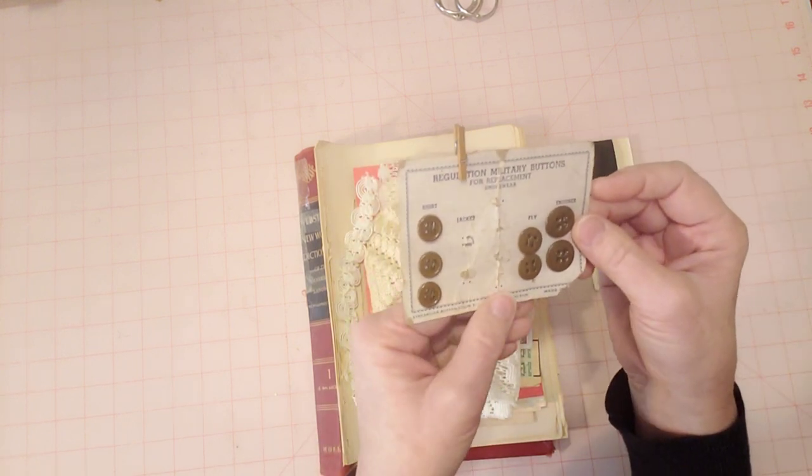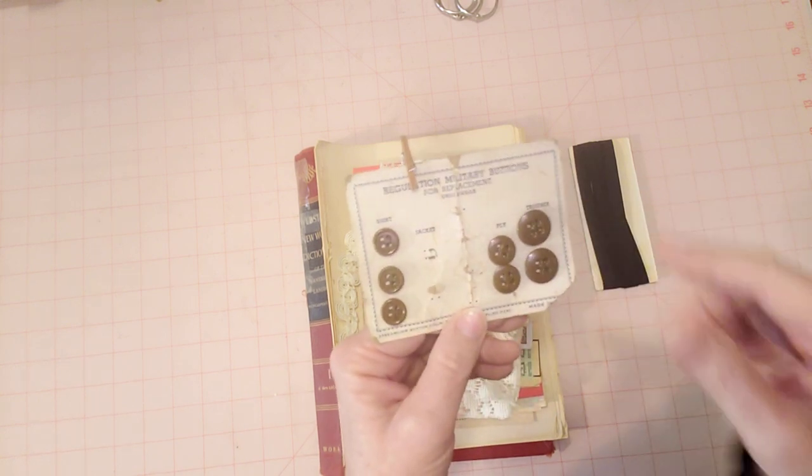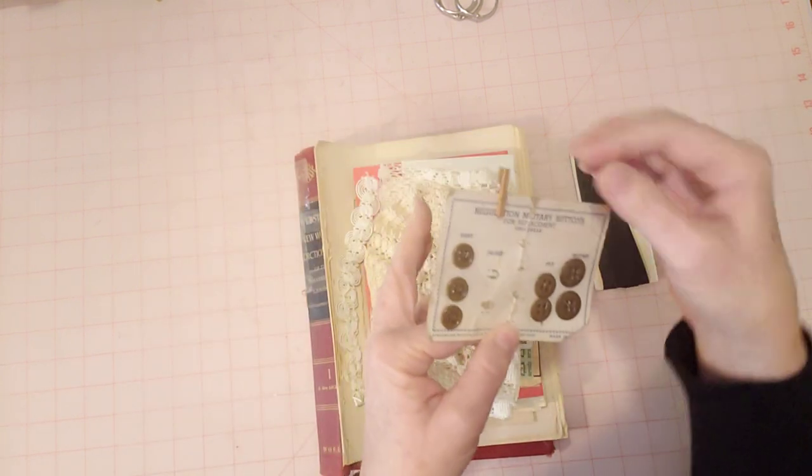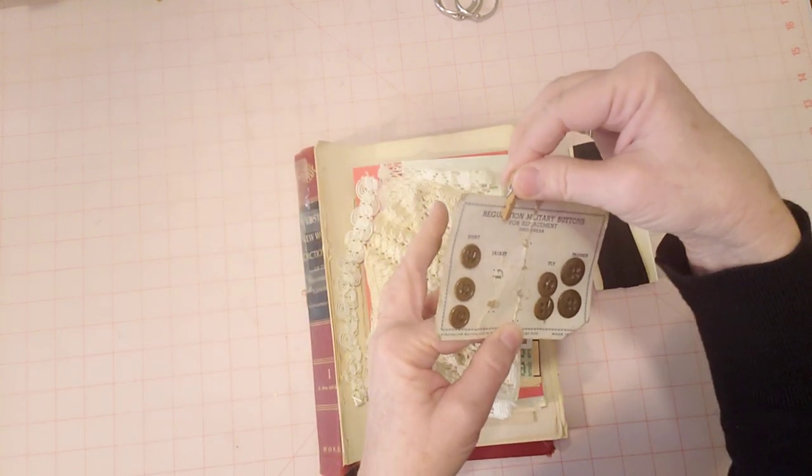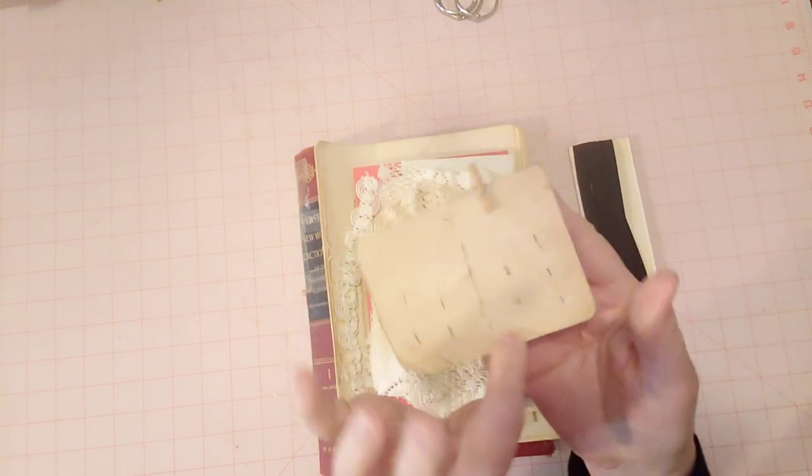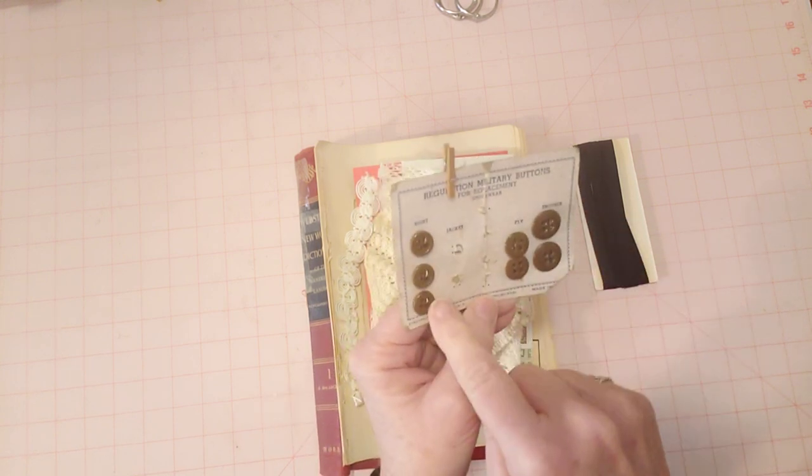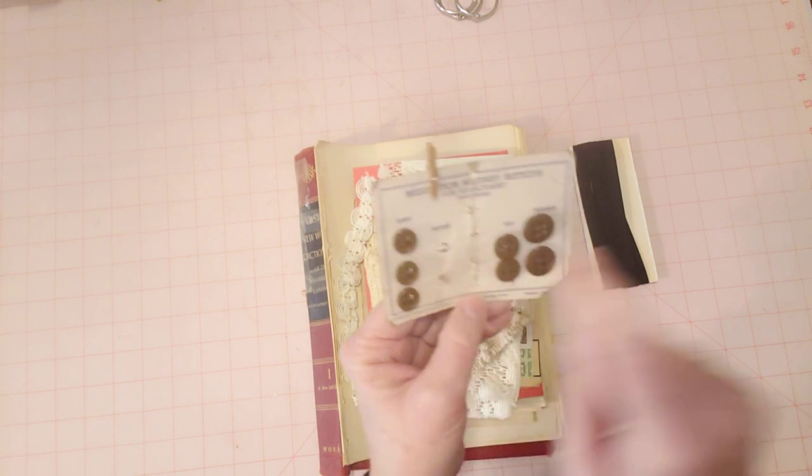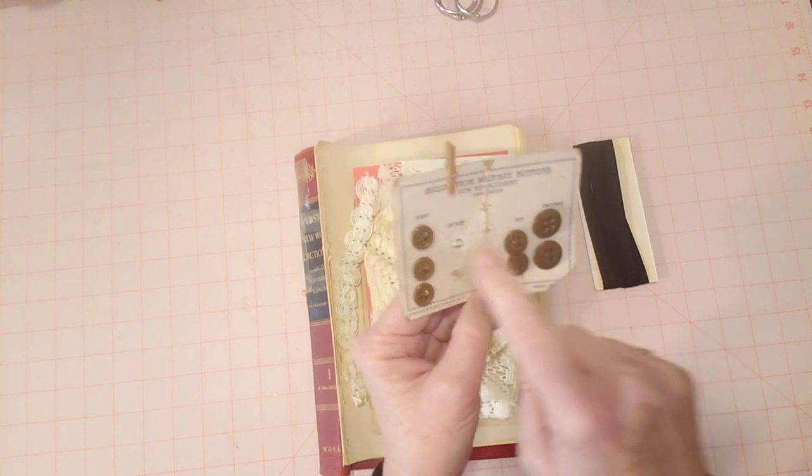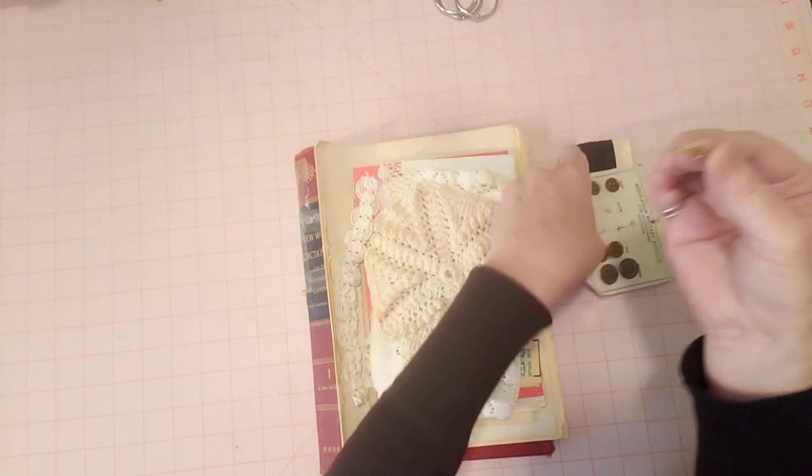I've got a button card here, a very old one. It says military buttons on this one. Whenever I picked this one up at a thrift store, all these things are original, authentic, from thrift stores that I've picked up through the last couple years probably. This one said military buttons, and I thought it was really cool because of that. And it has some of the original buttons on there. Some were used. The ones that say jacket were used. These say fly, these say trouser, and these say shirt. Isn't that cool?